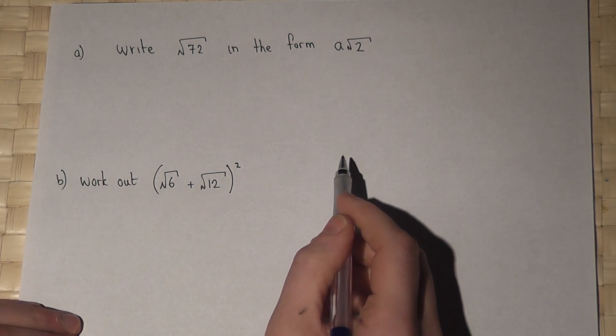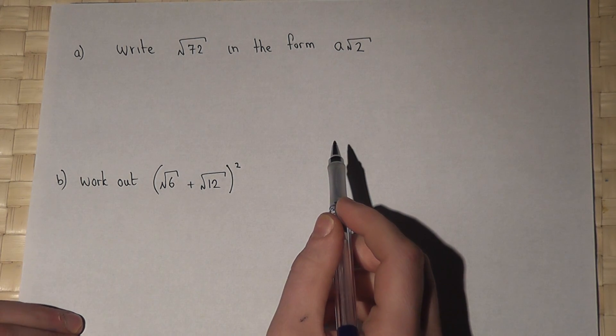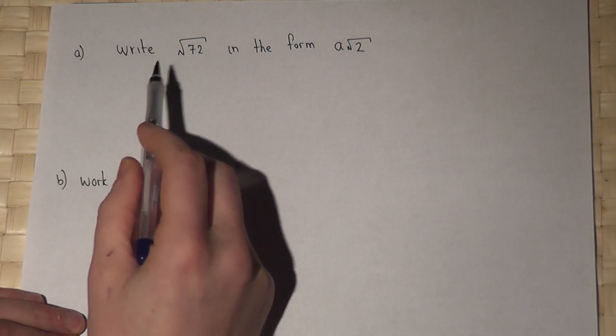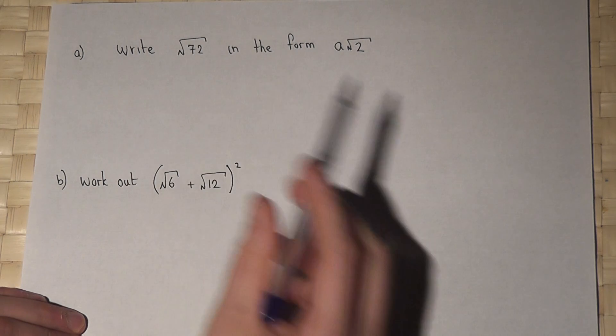This video looks at two fairly typical assert-style questions. The first question asks us to simplify root 72.